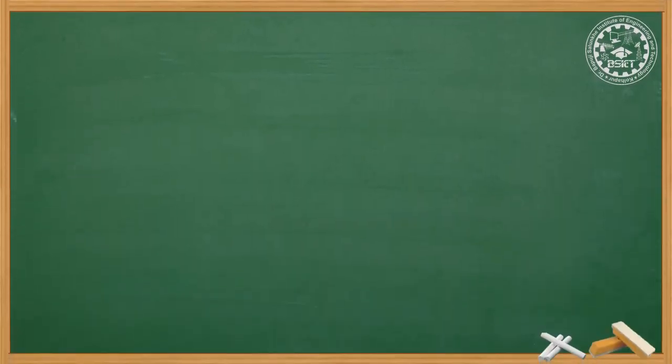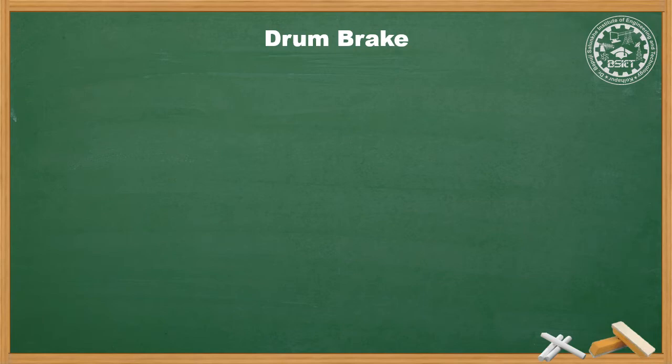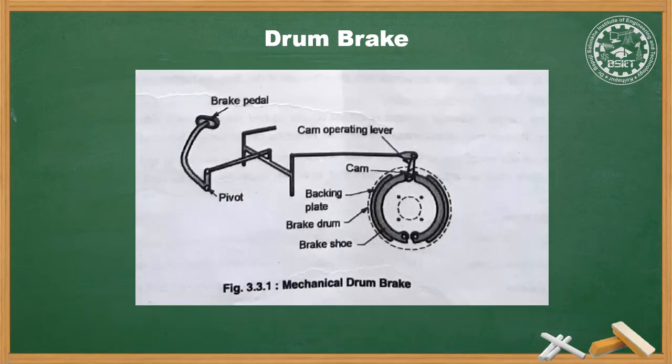Starting with drum brake — mechanical drum brake. Mechanical brakes are obsolete nowadays as a service brake and are used in rear wheels of a car as a parking or emergency brake. In a motor vehicle, the wheel is attached to the drum.